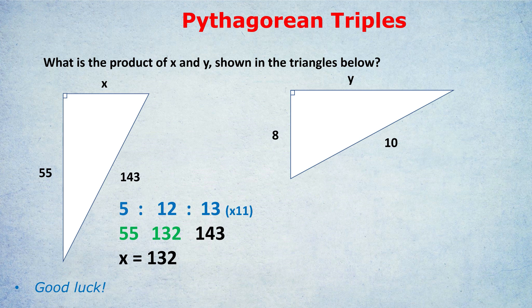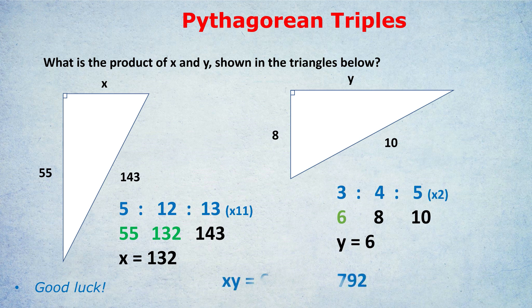5 times 11 gives 55, and 13 times 11 gives 143, so the missing length x must be 12 times 11 — that's 132. No calculator needed. For the next triangle with y, 8, and 10: 8 is 4 times 2 in the 3-4-5 triangle, and 10 is 5 times 2, so it's a 3-4-5 triplet doubled. That gives y equals 6. The question asked for the product of x and y, so 6 times 132 equals 792.